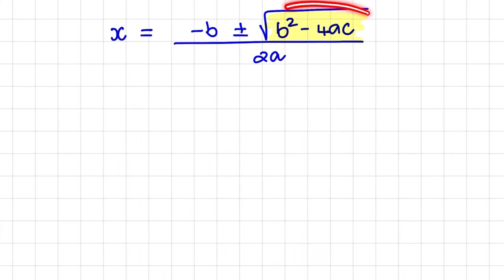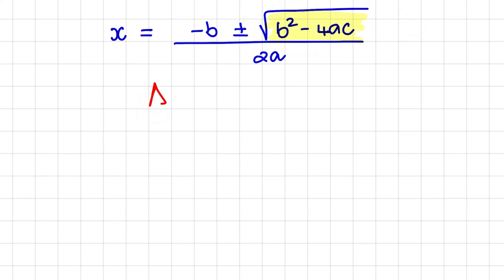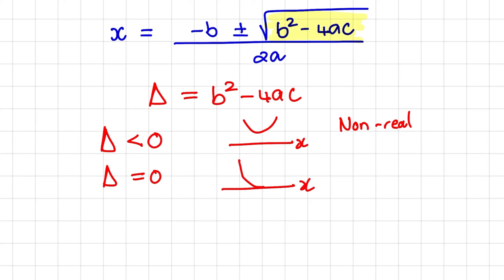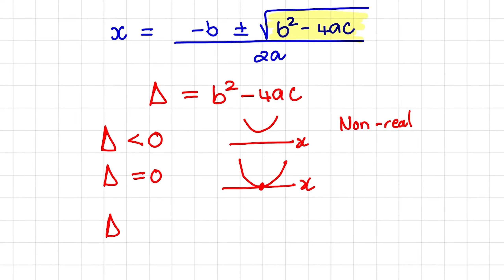Just a quick recap: we can use the square root section of the quadratic formula as the discriminant, represented by delta, equal to b squared minus 4ac. When delta is smaller than zero, the parabola does not intersect the x-axis, so the roots are non-real. When delta equals zero, the turning point is exactly on the x-axis, giving one single root. When delta is greater than zero, we have two roots — rational if delta is a perfect square, and irrational if it is just a positive non-perfect-square number.